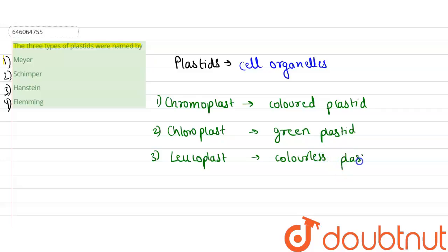Colorless plastid. And these three names were basically given by Schimper. All right, so option two will be correct—not Meyer, not Hanstein, not Flemming. The correct answer of the above question will be option two. I hope you understood, thank you very much.